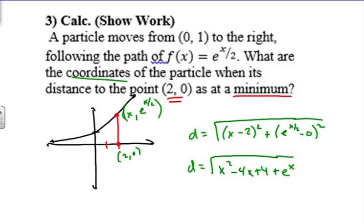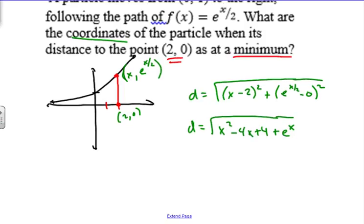Now from here, normally what we would do is solve this. So you'll go in your calculator now and find what is the minimum distance from there. And you would find your x value. And then once you find your x value, you can find your y value.